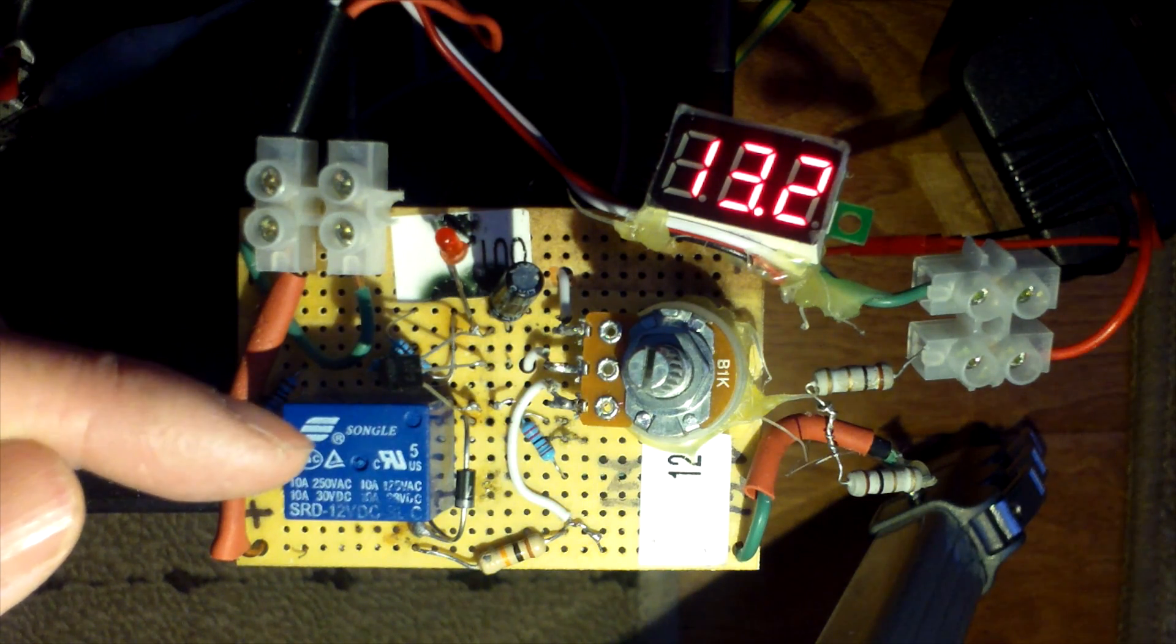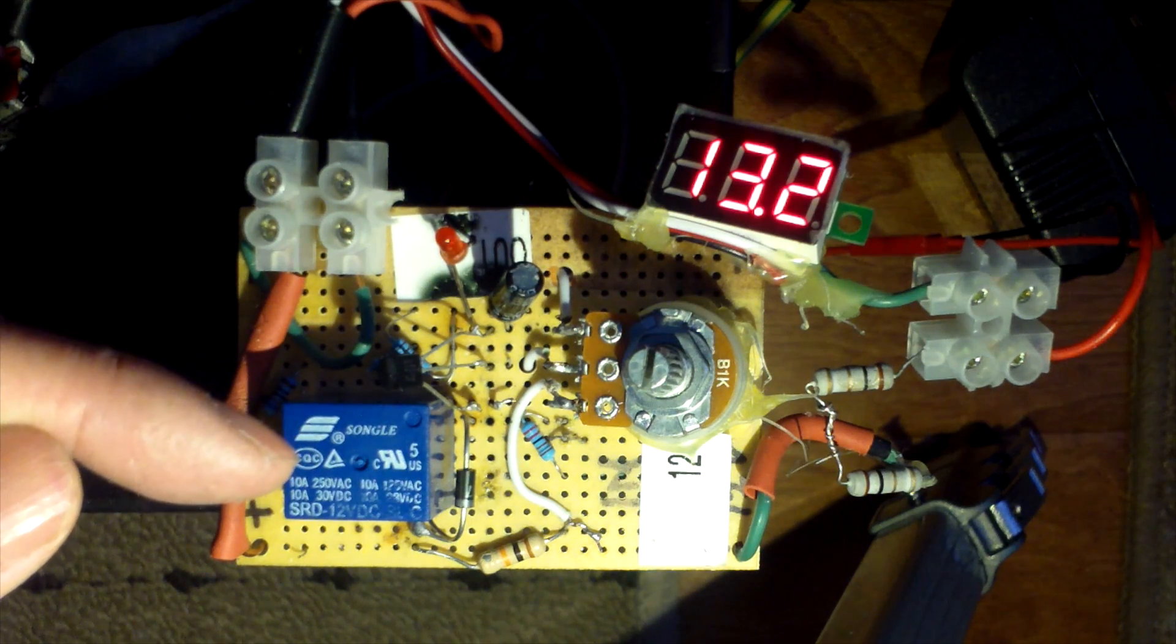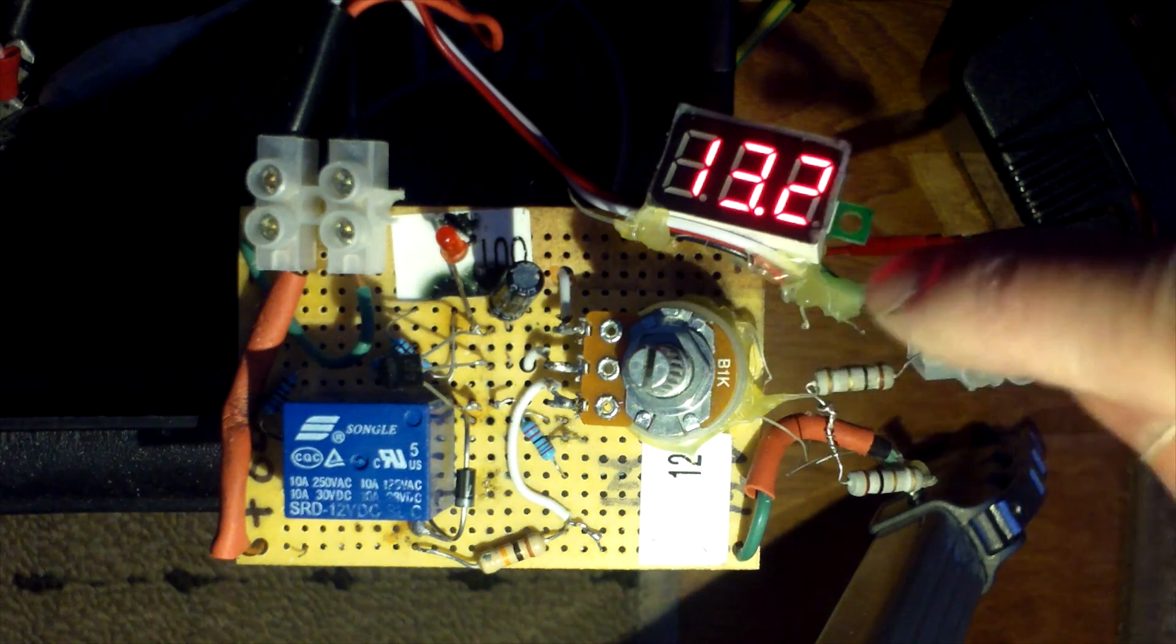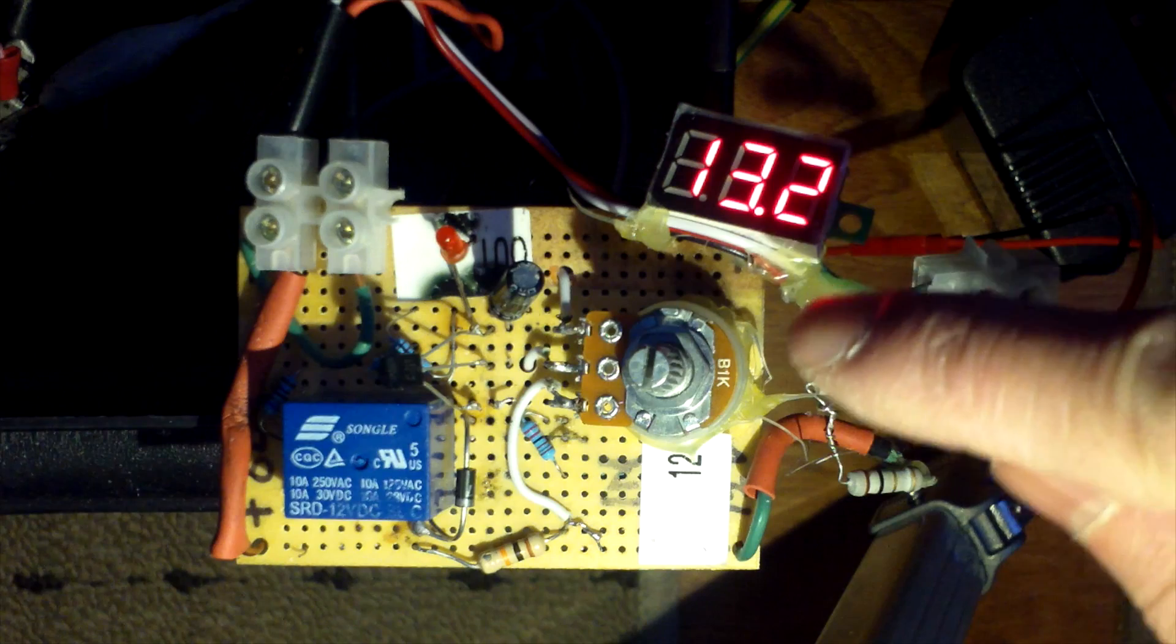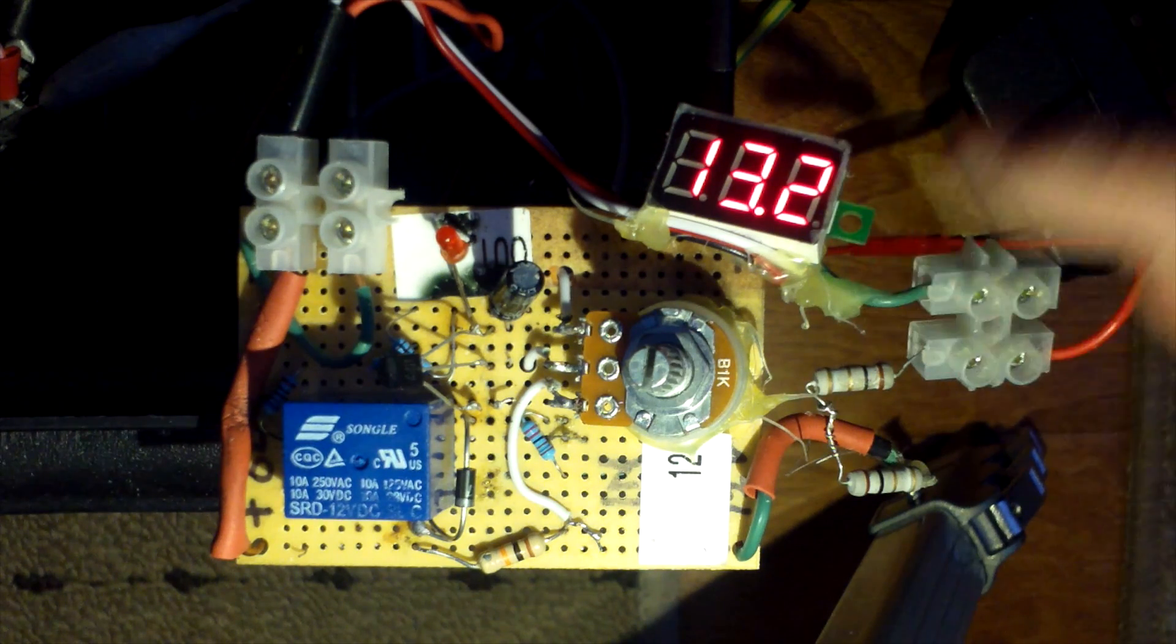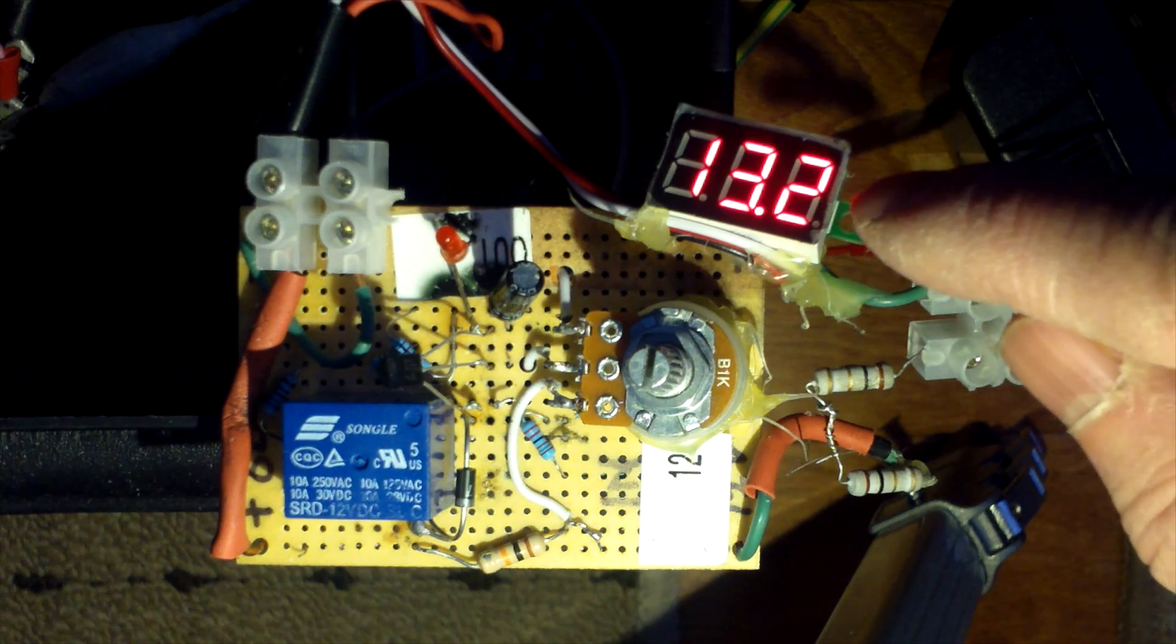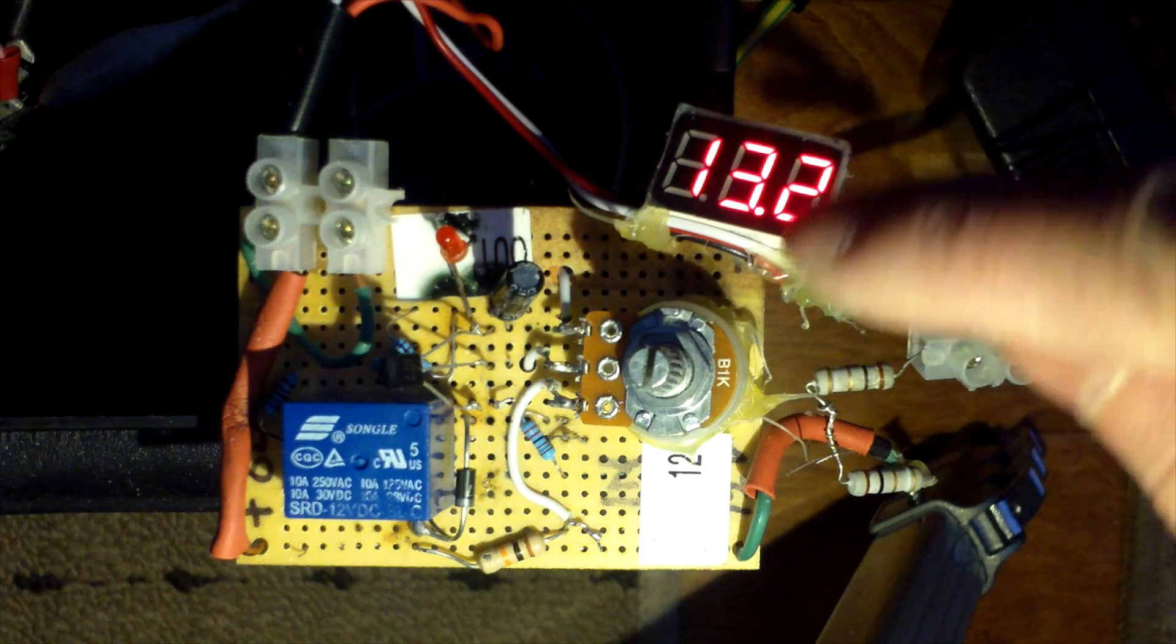The cut-in voltage is just a little bit under 12 volts, maybe 12 volts. And the cutout voltage is adjustable by the 1k potentiometer here, and you can set it to whatever you like. I generally set it to 13.7.